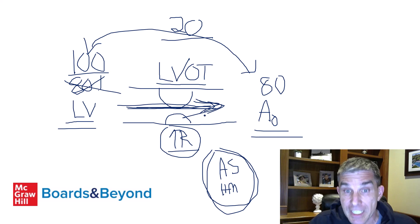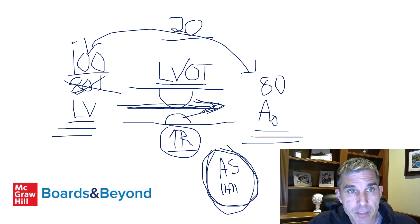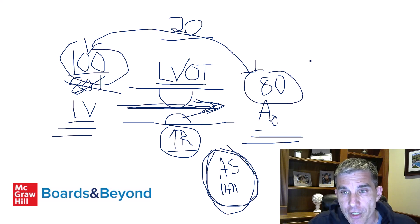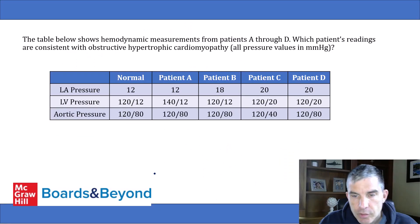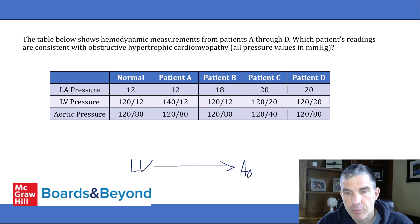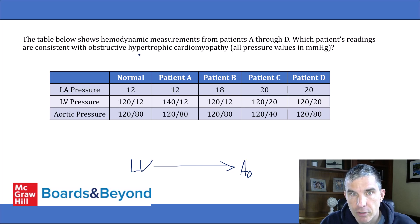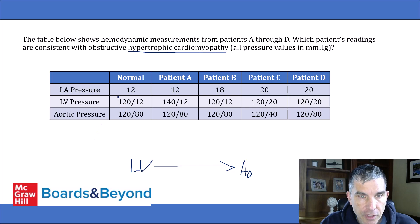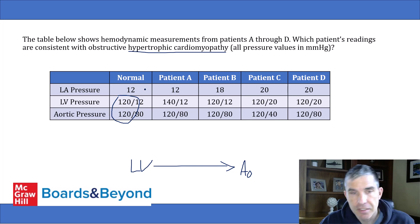The key point is that in systole, when blood is leaving the left ventricle and going to the aorta, patients with these conditions will show a pressure difference between left ventricular pressure and aortic pressure. We are looking for the patient where this gradient exists. Looking at the normal patient first: the systolic pressures in the left ventricle and aorta are the same — no gradient — indicating a normal patient without aortic stenosis or hypertrophic cardiomyopathy.